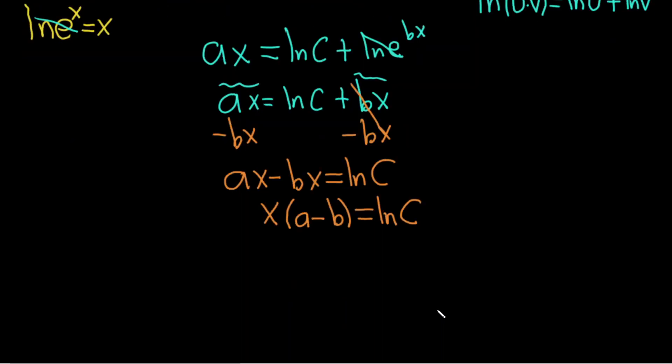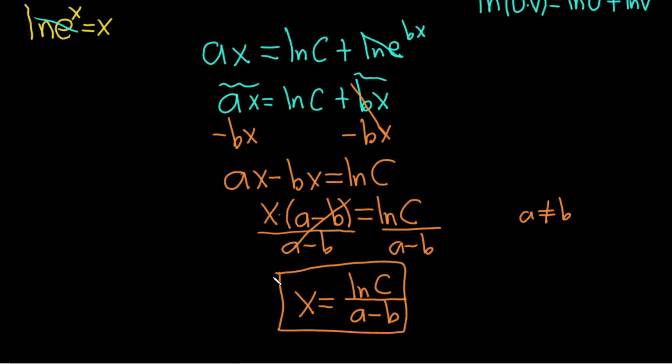Since x is being multiplied by (a - b), to solve for x we simply divide by (a - b). This is where we need to realize that a is not equal to b—otherwise, we would be dividing by zero. So x = ln(c)/(a - b). And that would be the answer to this equation.